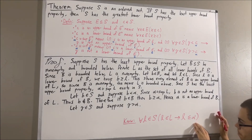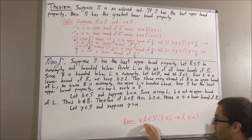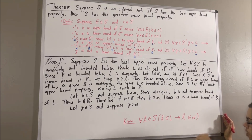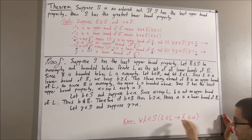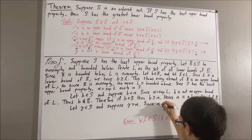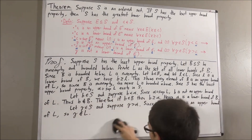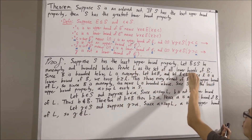So we know that this statement is true, and it works for every element in S, so in particular it must work for gamma. Taking L to be gamma, we have: if gamma is an element of L, then gamma is less than or equal to alpha. By the contrapositive: if gamma is greater than alpha, then gamma is not an element of L. Well, we know that gamma is greater than alpha. Therefore, gamma is not an element of L. And since gamma is not an element of L, by definition of L, this means that gamma is not a lower bound of B. And that is precisely what we wanted to show.